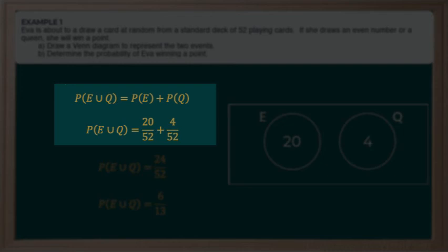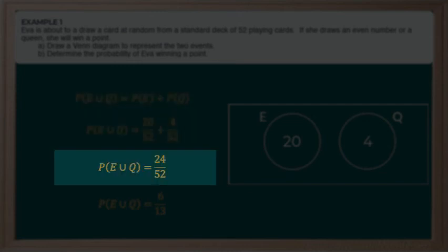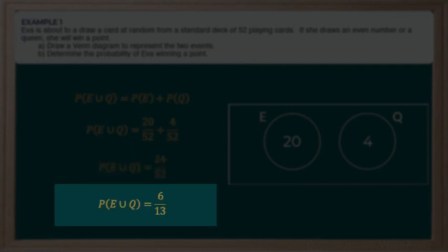Then, if we move over to the probability of event Q, which is P of Q, we know there are 4 possible queens out of 52 total possibilities in our deck. When we add these together, remember that when we add rational numbers or when we add fractions, we're just going to add those numerators together. So we've got 24 out of 52, and when we simplify that, we know that the probability of selecting an even number or a queen is going to be 6 out of 13.